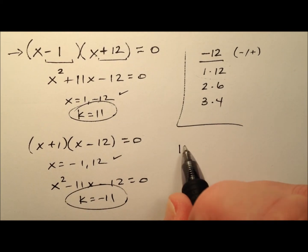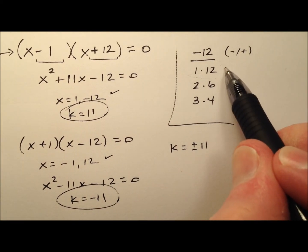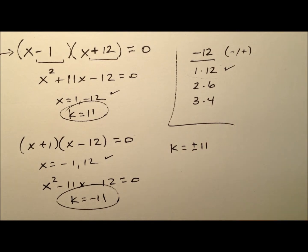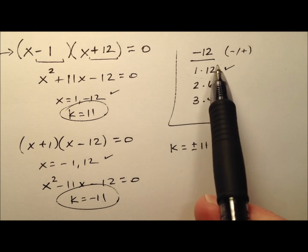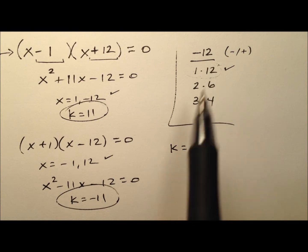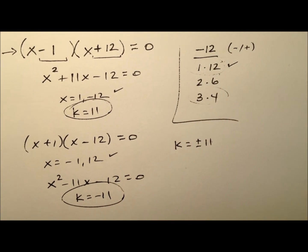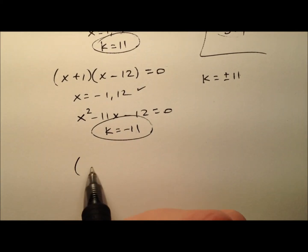So k can equal plus or minus 11 from the factor pair 1 and 12. Where did this 11 come from? It's the difference between these two factors: 12 - 1 = 11. I wonder if that pattern holds for 2 and 6, and 3 and 4.